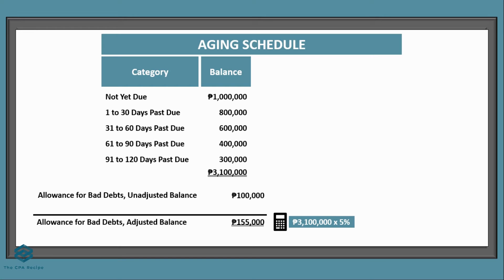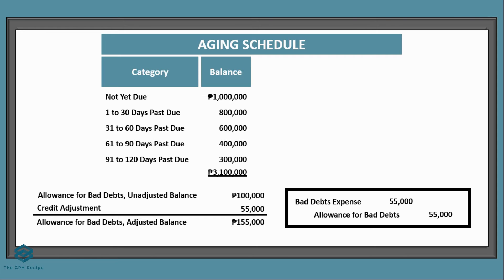Since 155,000 should be the balance at end of period and there's already 100,000, we only need to add 55,000. Therefore, the entry is: debit bad debts expense, credit allowance for bad debts for 55,000 pesos.